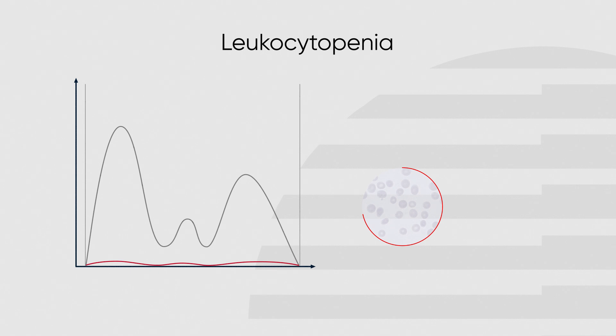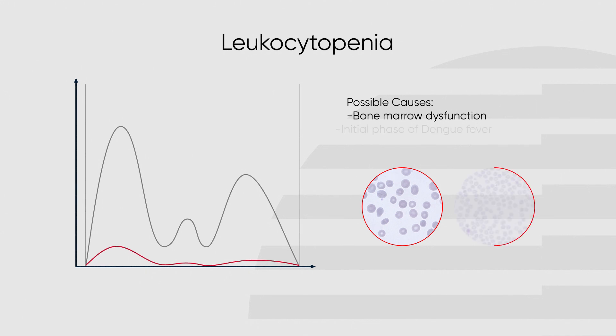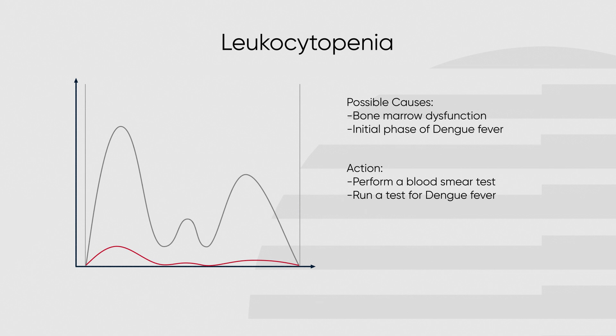A general decrease of leukocytes in combination with a decrease of red blood cells and platelets — also called pancytopenia — indicates a severe bone marrow dysfunction. If instead the red blood cell count is normal but platelets and white blood cells are low and the lymphocyte ratio is high, this can be an indication of dengue-initiated destruction of myeloid progenitor cells. If any of these patterns occur, perform a blood smear and run a test for dengue fever.